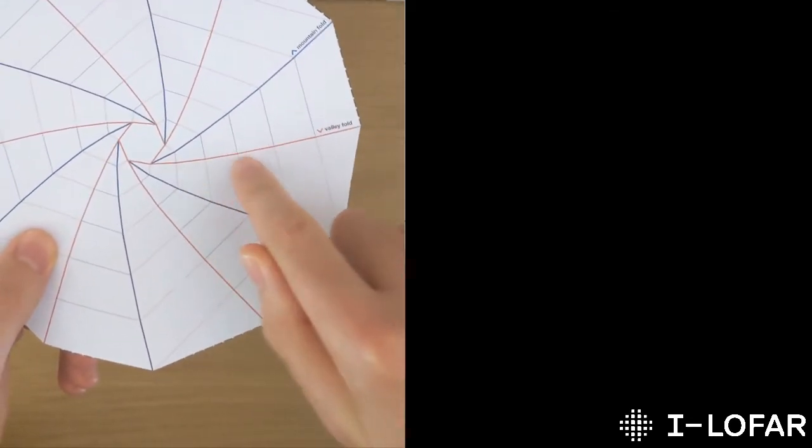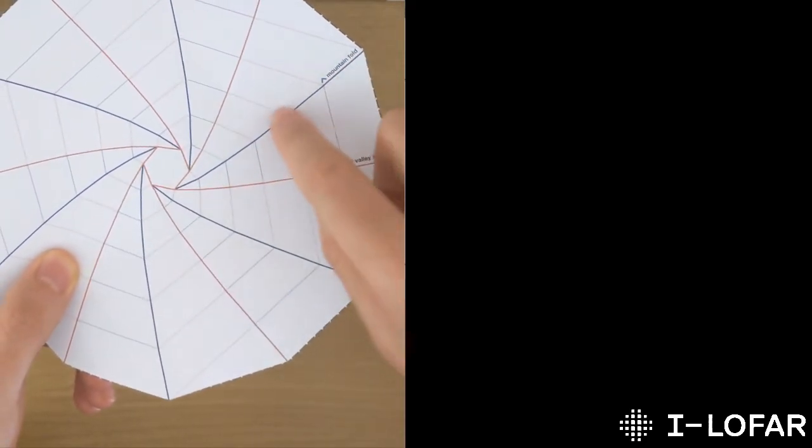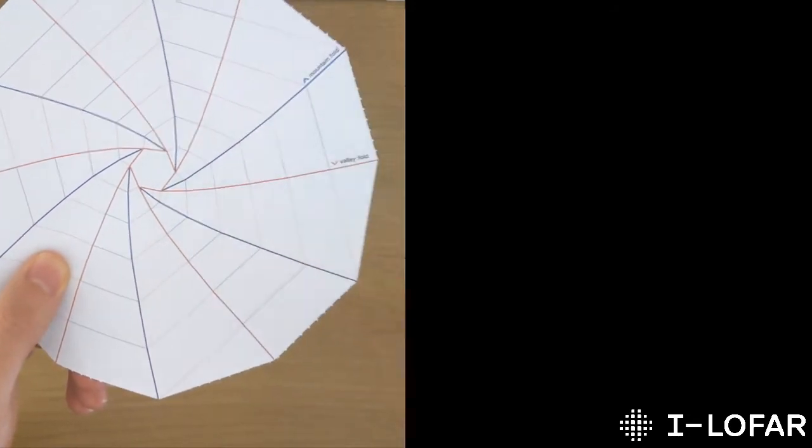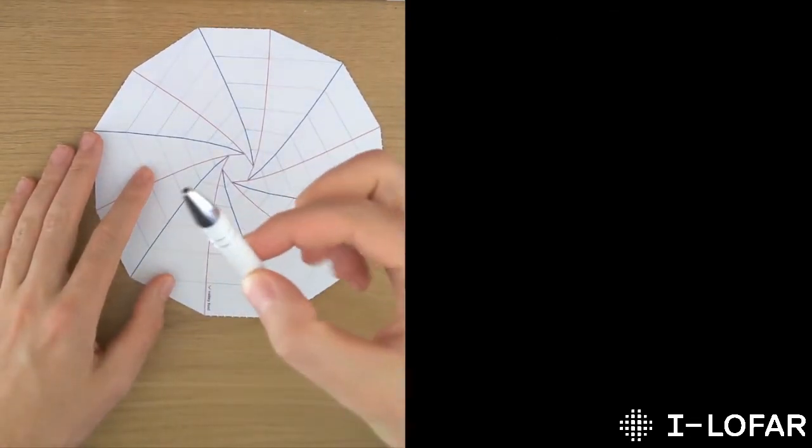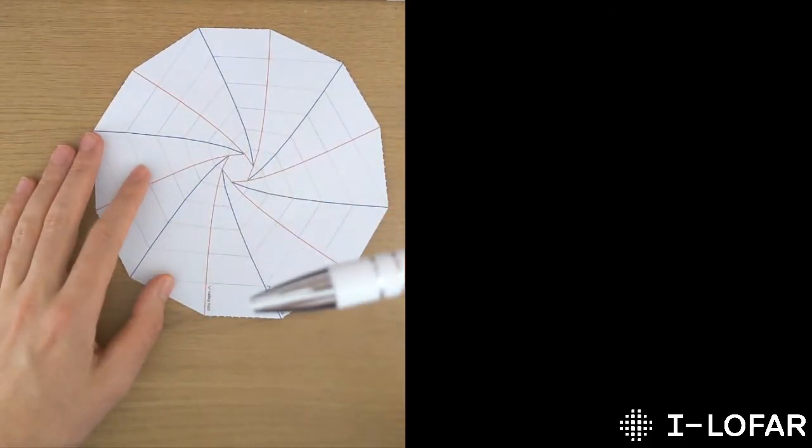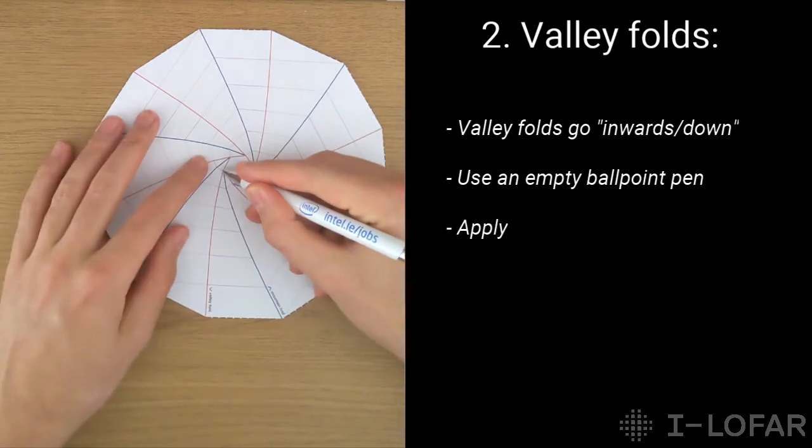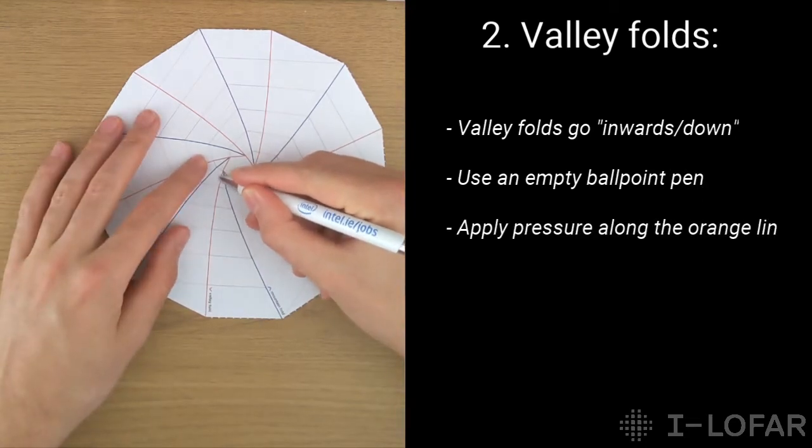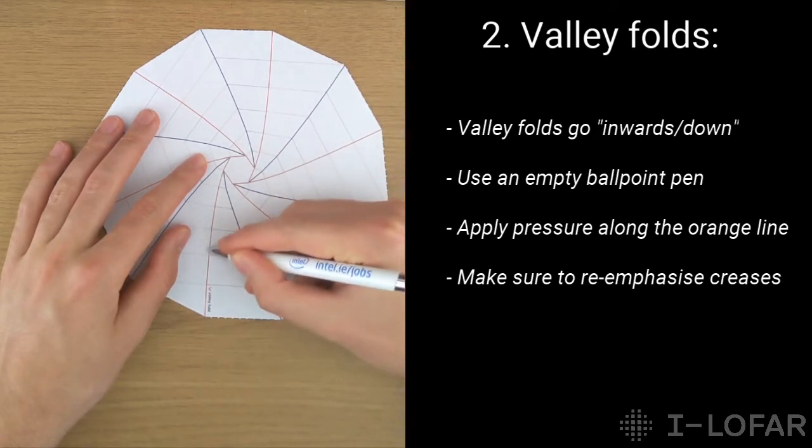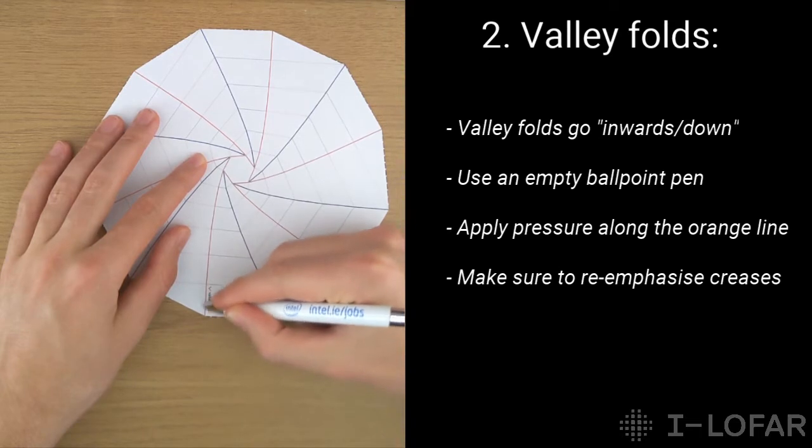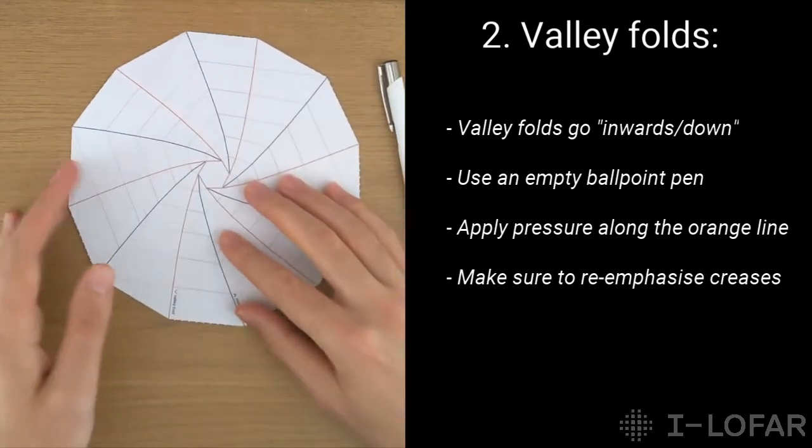And you will see that there is orange lines called valley folds, and blue lines called mountain folds. Now valley folds, as the name indicates, would be folded inwards, so towards the ground, and the mountain folds would be folded outwards. And you can use a ballpoint pen for the valley folds, but make sure that the ballpoint is actually retracted. And what you want to do then, is use the empty ballpoint pen to go along the orange lines, go along the outline and really crease the paper in. And then, using the pen, put some pressure on those lines.